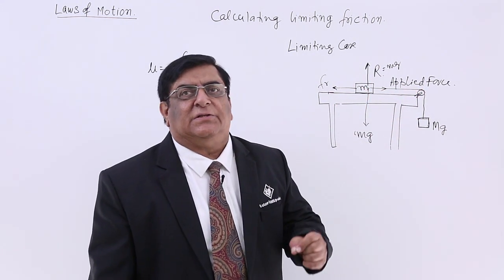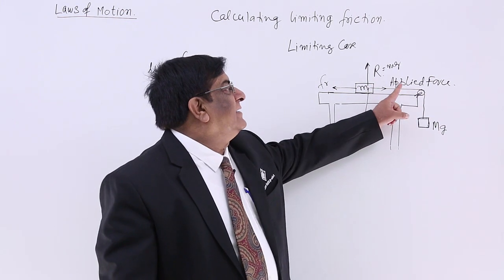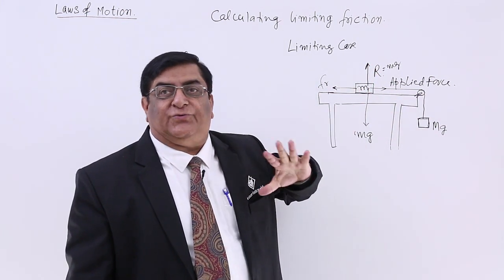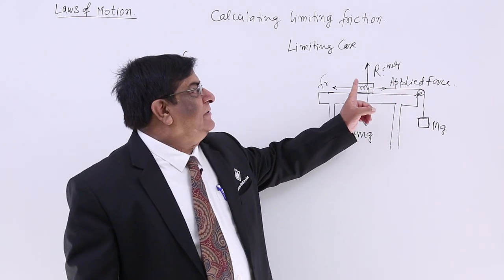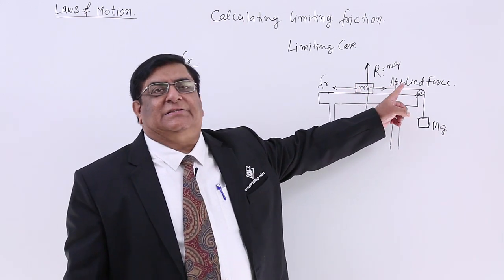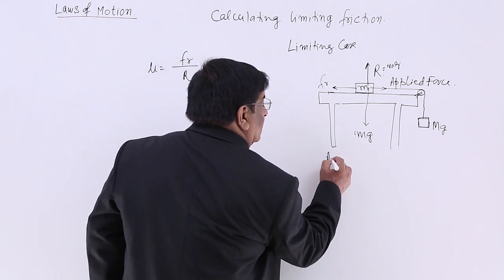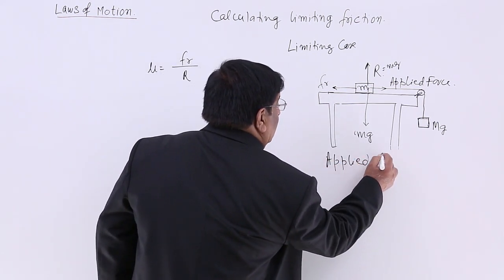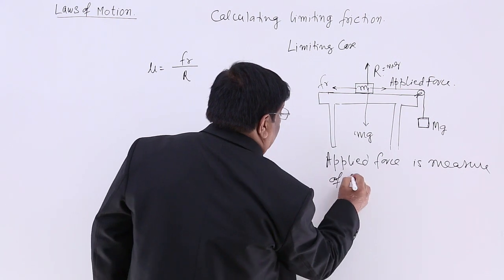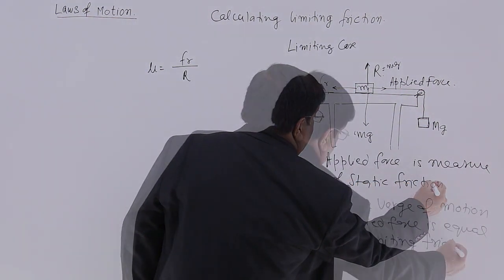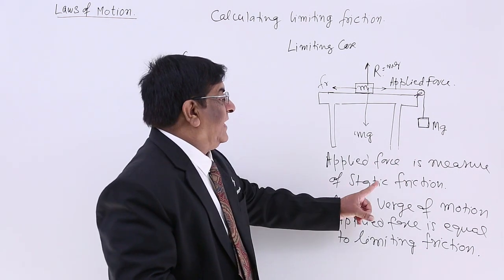Why is it equal to the applied force? Because the moment I am going to increase it, it is going to move. That shows that at present, applied force is equal to limiting friction. Always, friction is equal to applied force in the condition of rest. If the applied force is 1 Newton, friction is 1. If it is 3, friction is 3. If it is 5, friction is 5. So I can always measure friction by the applied force. Please note and remember: applied force is the measure of static friction, always.